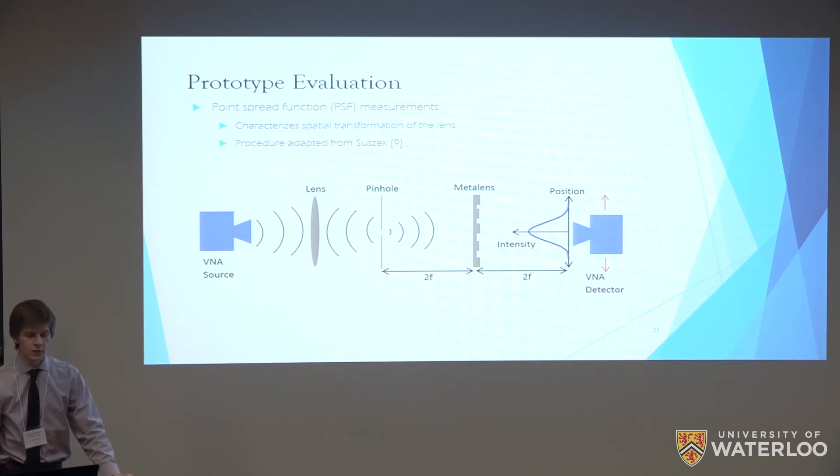How do you evaluate the lens? It's with using a measurement called a point spread function. Basically, this is our setup. Essentially, you have what's called a vector network analyzer, which is a source of terahertz radiation and a detector all rolled into one. We have the source on one end, we have a normal HDPE terahertz lens, and then it takes the light, focuses it onto a pinhole. Basically the pinhole will act ideally as a point source of terahertz radiation. We then, two focal lengths away, place our metal lens. Then another two focal lengths away, we place our detector. We can actually move the detector around and map the intensity distribution of the light as a function of position.